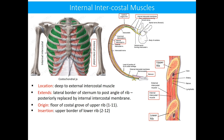In each space, the internal intercostal muscle originates from the floor of the costal groove of the upper rib and is inserted onto the upper border of the lower rib. The direction of the fibers in the anterior part is inferolateral; in the middle or lateral part, the fibers are directed inferiorly and posteriorly; whereas in the posterior part, the fibers are directed inferiorly and medially.